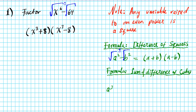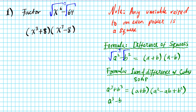Let's write down the formulas for sum and difference of cubes. Remember the SOAP mnemonic — same, opposite, always positive. For sum of cubes: a cubed plus b cubed equals (a plus b)(a squared minus ab plus b squared). For difference of cubes: a cubed minus b cubed equals (a minus b)(a squared plus ab plus b squared) — same as the first sign, opposite for the next, always positive last.